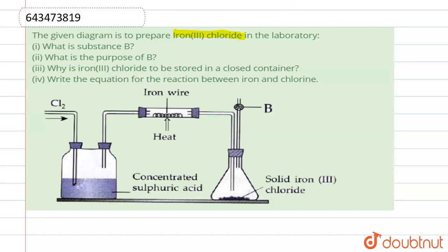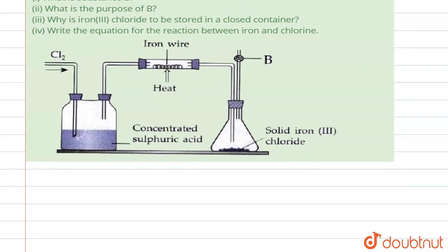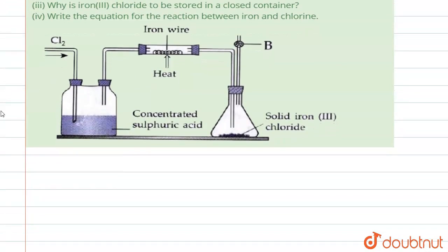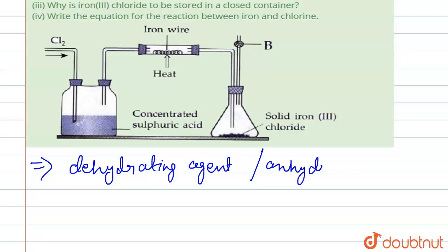So here, the substance B is a dehydrating agent. B is a dehydrating agent; it also may be anhydrous calcium chloride.